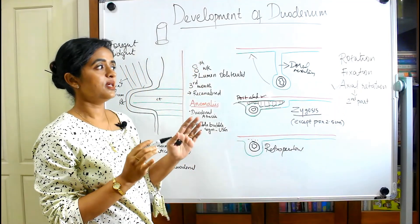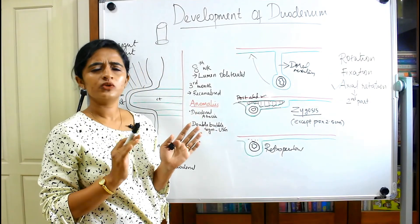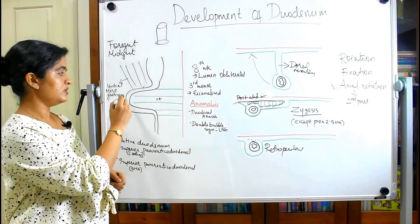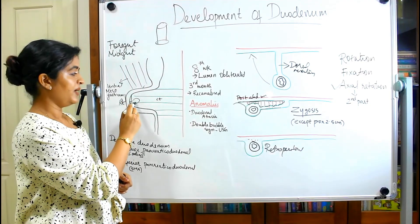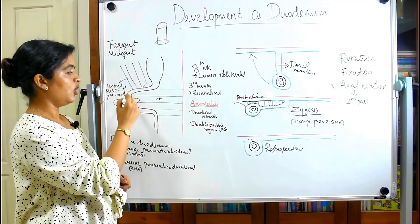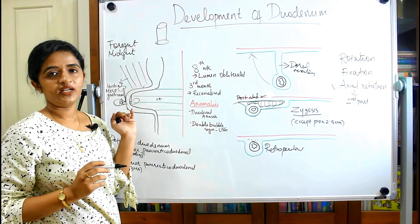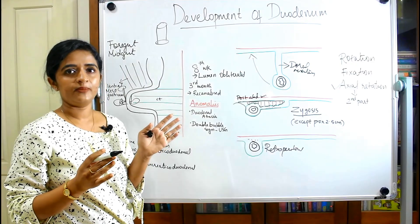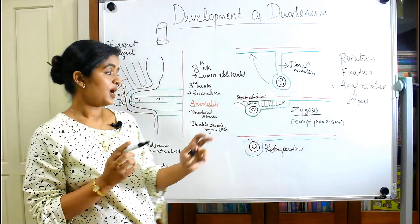The third important aspect is axial rotation, which happens only in the second part of the duodenum — not the other parts. The second part is where the dorsal pancreatic bud, ventral pancreatic bud, and hepatic bud all develop. For the details of these buds, please see the session on the development of the liver and biliary apparatus.